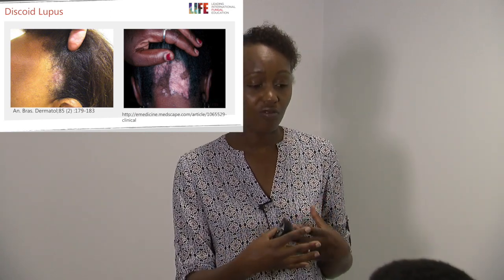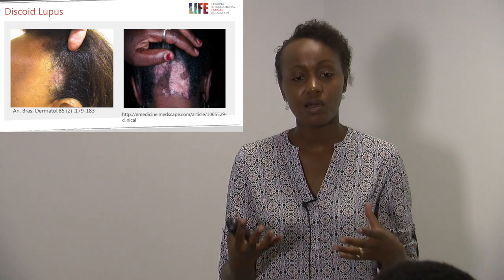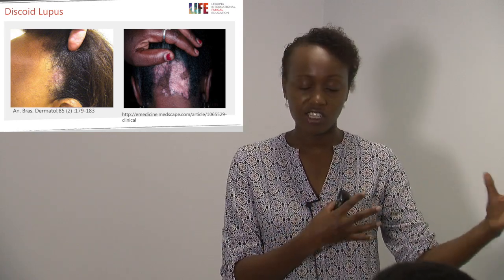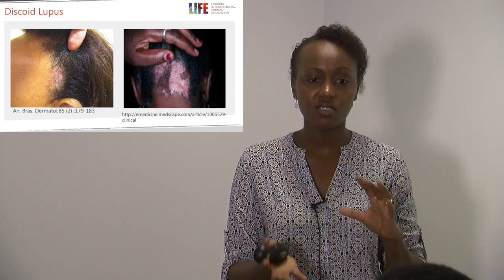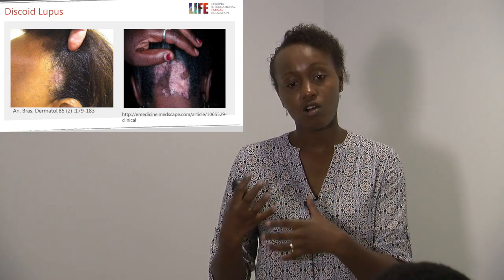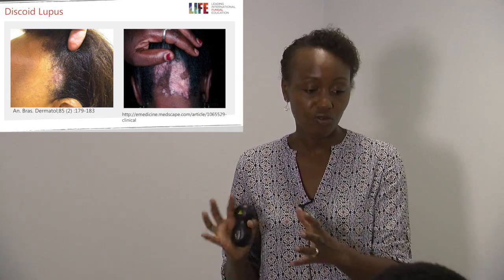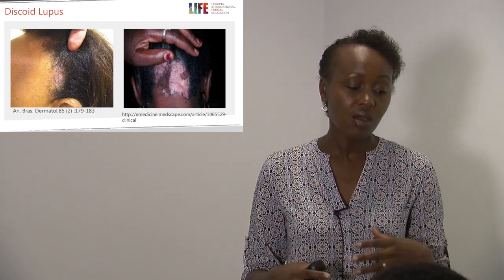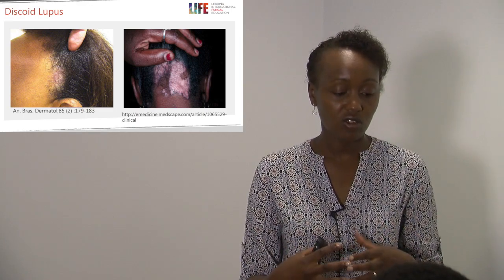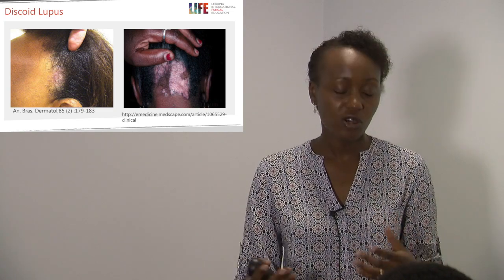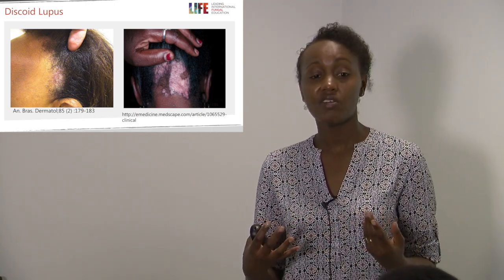Discoid lupus typically presents in females in their late teens to mid-20s, while tinea capitis classically presents in boys aged 3 to 9 years, though it also occurs in females of reproductive age with risk factors. When considering discoid lupus, assess the color of lesions, presence of lesions elsewhere, and systemic signs. Biopsy with immunofluorescence can definitively differentiate the two.